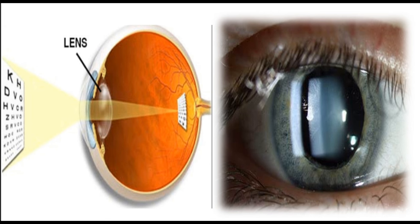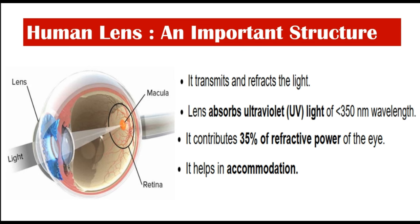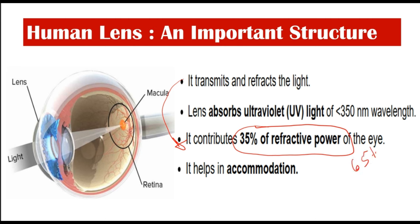The lens is a transparent biconvex structure placed between the iris in front and the vitreous chamber behind. It is of utmost importance within the human eye. It transmits and refracts light, contributing to about 35% of the refractive power of the eye. The remaining 65% comes from the cornea. The lens also helps in accommodation and absorbs harmful UV light of less than 350 nanometers in wavelength.